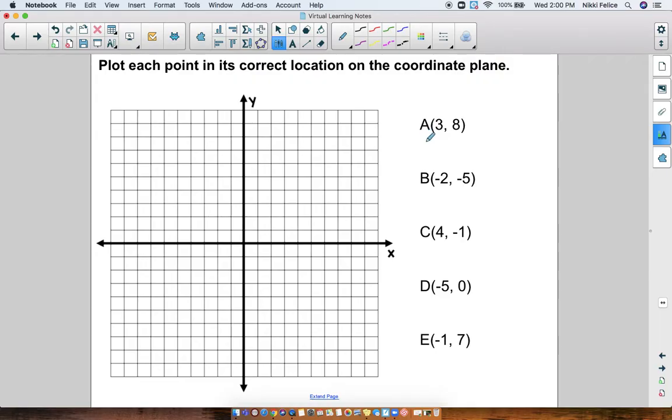So point A, I want it on the location 3, 8. Well, again, let's remember that x comes first, and then the y-coordinate comes second. So in this ordered pair, the x-coordinate is 3, and the y-coordinate is 8. So I need to go 1, 2, 3 on the x-coordinate, and now I have to go up to 8. So 1, 2, 3, 4, 5, 6, 7, 8. There is point A.